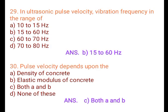Question 30: Pulse velocity depends upon: A. Density of concrete, B. Elastic modulus of concrete, C. Both A and B, D. None of these. Answer: C. Both A and B.